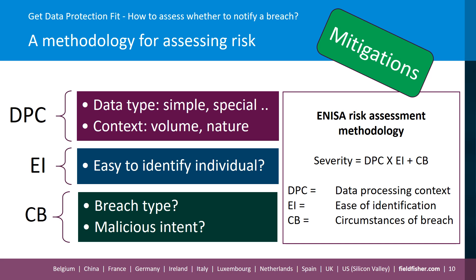The ENISA approach considers the data processing context — for example, what type of data is involved, what are the contextual factors, is it high volume, is it sensitive information, does it involve vulnerable individuals, and is it particularly useful for committing fraud or ID theft? You also consider the ease of identifying the individual and the type of breach — for example, was it an accidental email send or was a malicious actor involved? In our Field Fisher methodology, we go further and also take into account mitigations. For example, for an accidental email send: has it been sent to a trusted recipient who has subsequently confirmed they've deleted the information, thereby mitigating the risk and harm to the individuals involved?